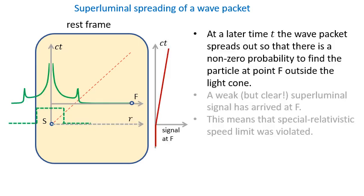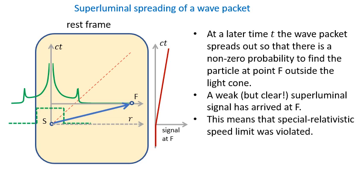At a later time t, the wave packet spreads out, so the probability of finding the particle at the finish line is slightly greater than 0. This is a weak but very clear superluminal signal. This means that Einstein speed limit is broken.